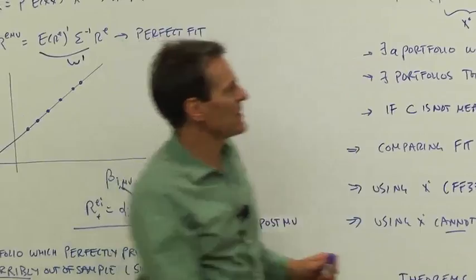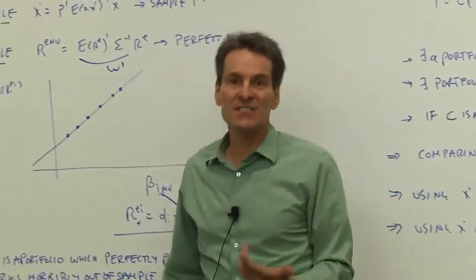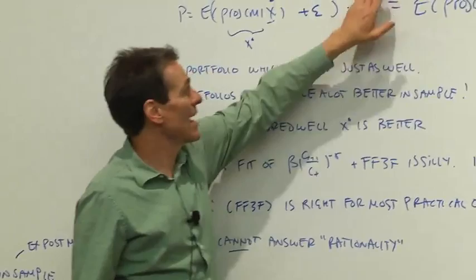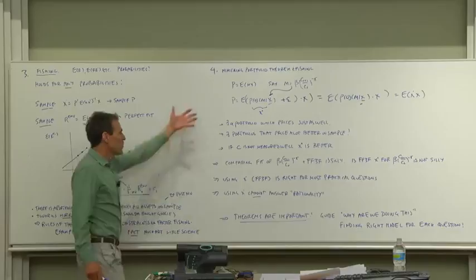Furthermore, if consumption isn't measured that well, then the mimicking portfolio for consumption will price even better than true consumption and the true discount factor simply because that can be much better. Asset returns are much better measured than the true underlying discount factor.